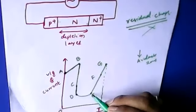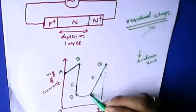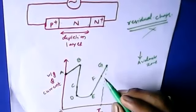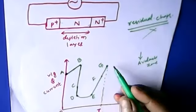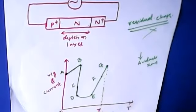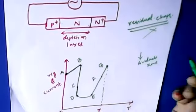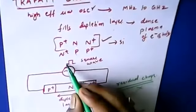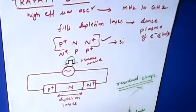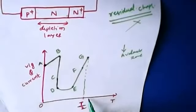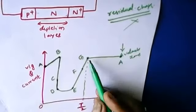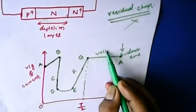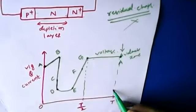At point E, all residual charges are removed and the device acts normally as a diode. The electric field increases again, and it acts as a capacitor, charging up to point G. During the negative half cycle of the square pulse, it remains constant — whatever charging has taken place remains constant — and then once it reaches point A again, the next cycle repeats.